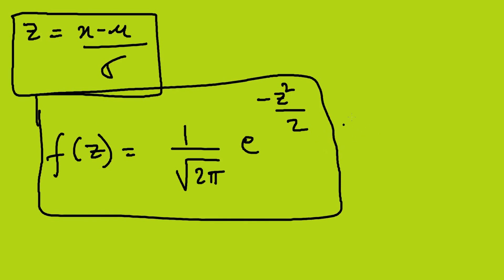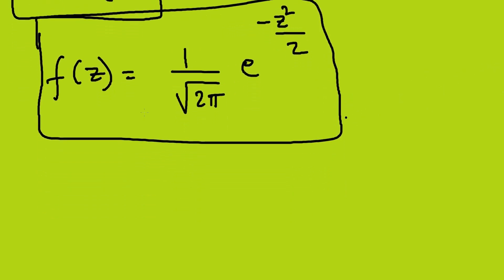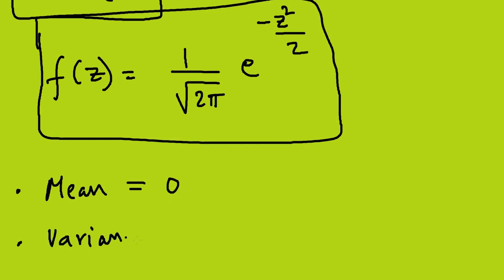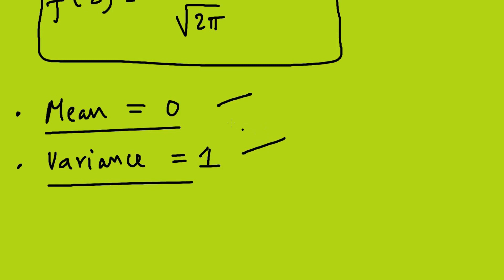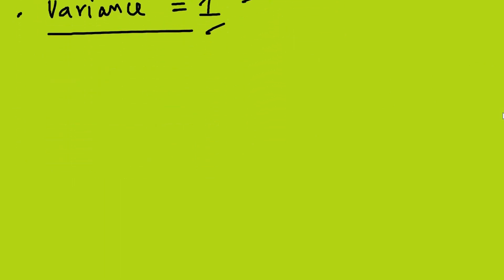Important properties of the standard normal distribution: the mean equals 0 and the variance equals 1. These two are very important points — mean = 0 and variance = 1. Now we will see the curve for the standard normal distribution.